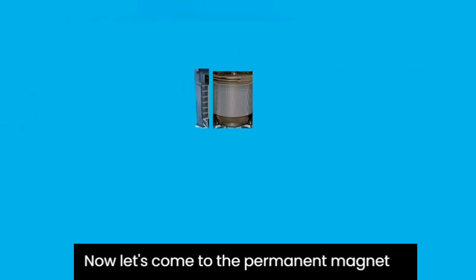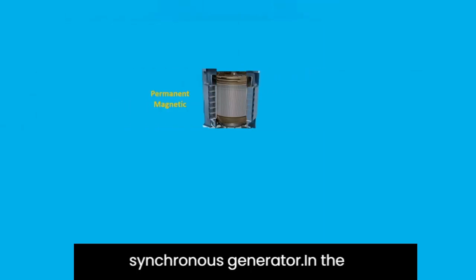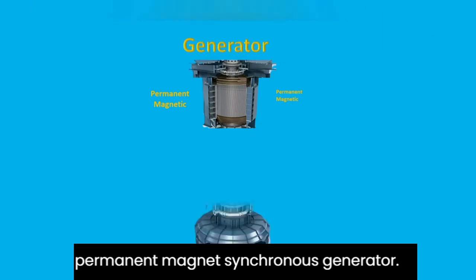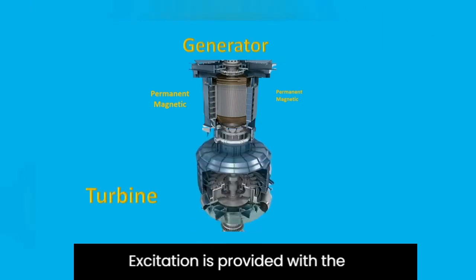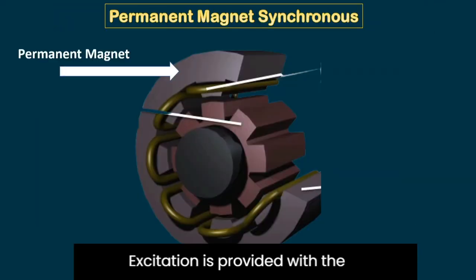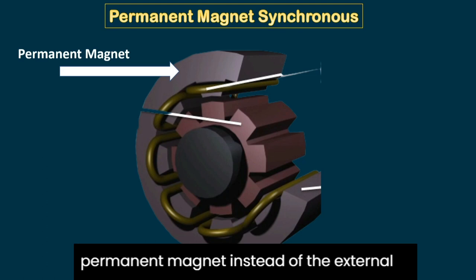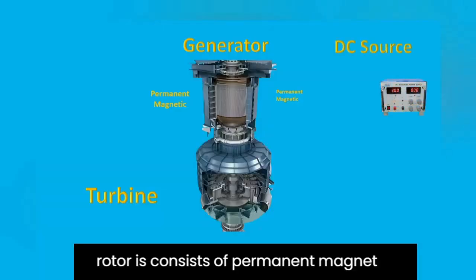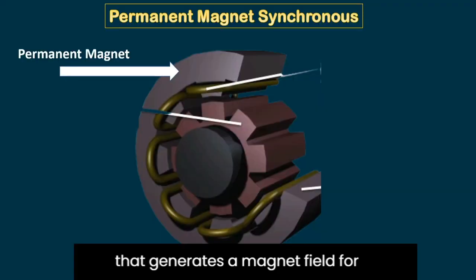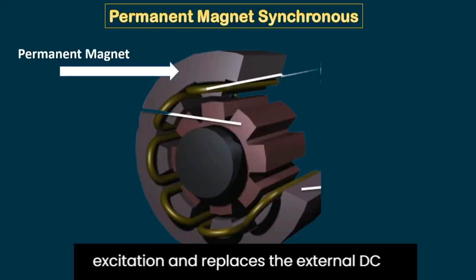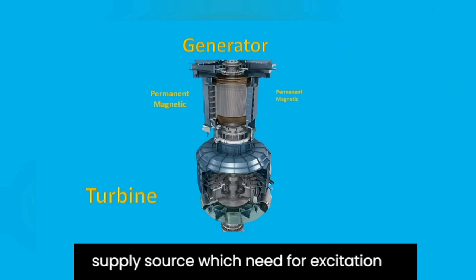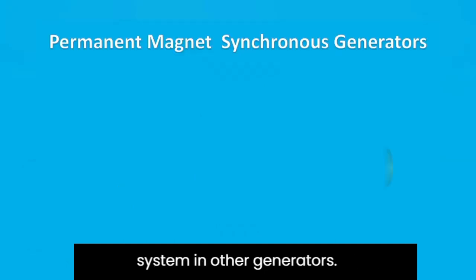Now, in the Permanent Magnet Synchronous Generator, excitation is provided with a permanent magnet instead of an external excitation DC source. Its rotor consists of permanent magnets that generate a magnetic field for excitation, replacing the external DC supply source required in other generators.